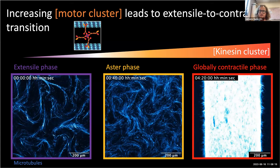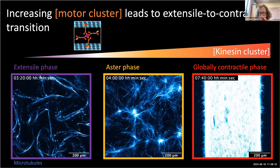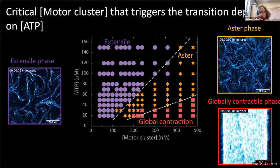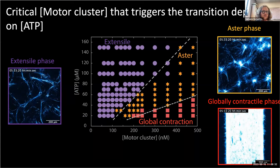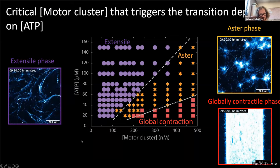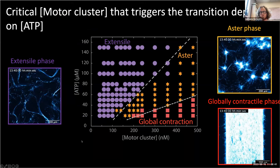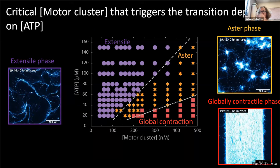This tells us it's not system-specific — there's something generic at play. We then titrated both ATP concentration and motor concentration to build a phase diagram with ATP on the Y-axis and motor concentration on the X-axis. Increasing motor concentration drives an extensile-to-contractile transition. Increasing ATP concentration drives the reverse — a transition from the aster phase back to the extensile phase — and at higher ATP you need even more motors to see contraction again.